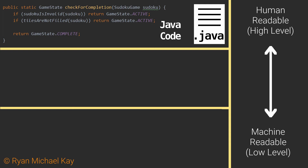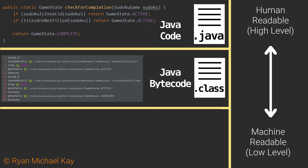First, the Java code, which is written in files that have the .java file extension, are given to a program called JavaC, which is a shorthand name for the Java compiler. JavaC will take the code that we have written and reproduce it in Java bytecode files, which have the .class file extension.